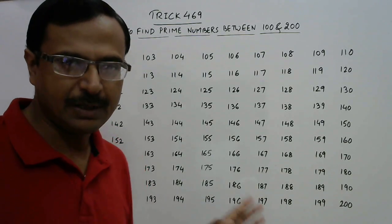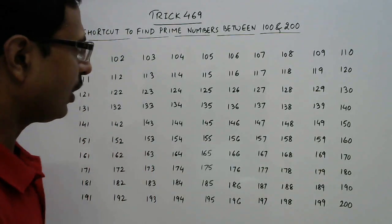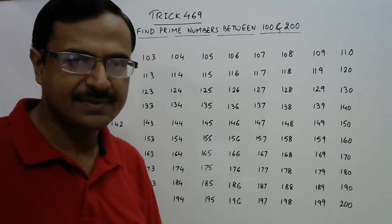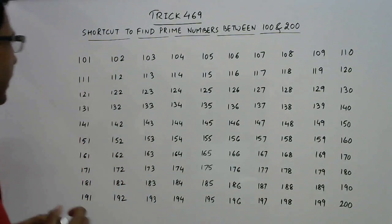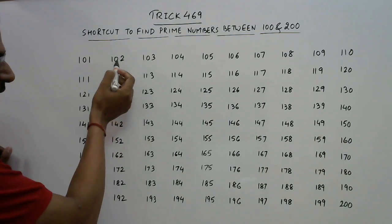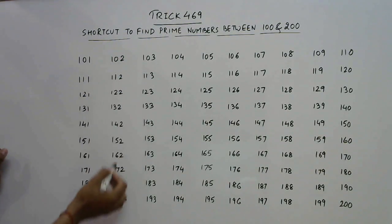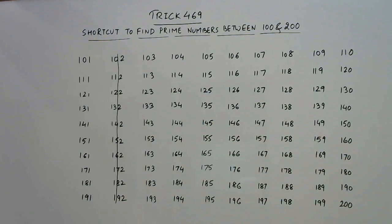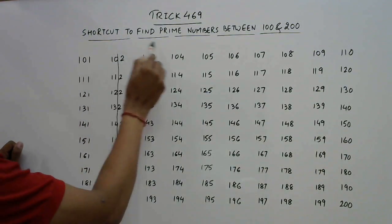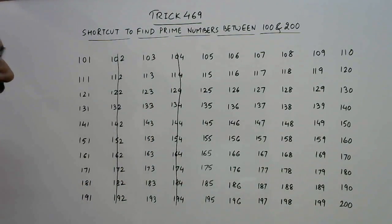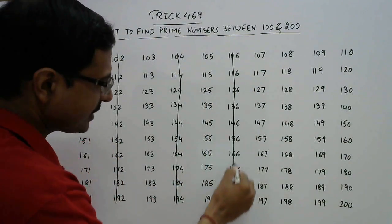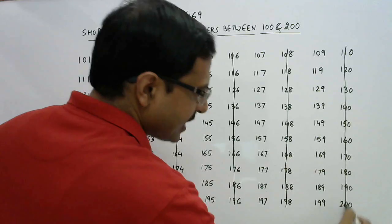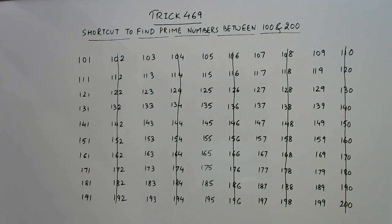First, in the first row from 101 to 110, find all the even numbers, because even numbers can never be prime. So 102 is even — the entire column of 102 gets cancelled because all numbers in it are even. Likewise, the columns of 104, 106, 108, and 110 all get cancelled, as all numbers in those columns are even. So now we are left with only odd numbers.